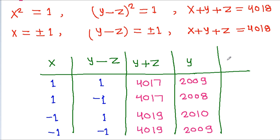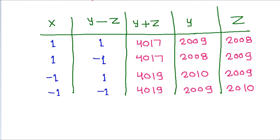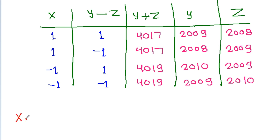To find z: in case 1, y - z = 1 and y = 2009, so z = 2008. In case 2, y - z = -1 and y = 2008, so z = 2009. In case 3, y - z = 1 and y = 2010, so z = 2009. In case 4, y = 2009 and y - z = -1, so z = 2010.